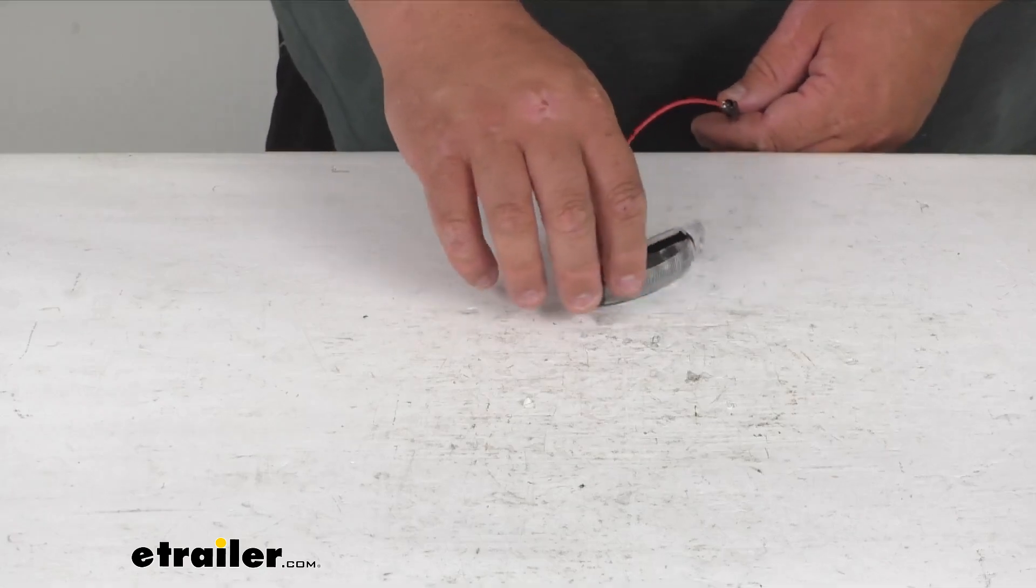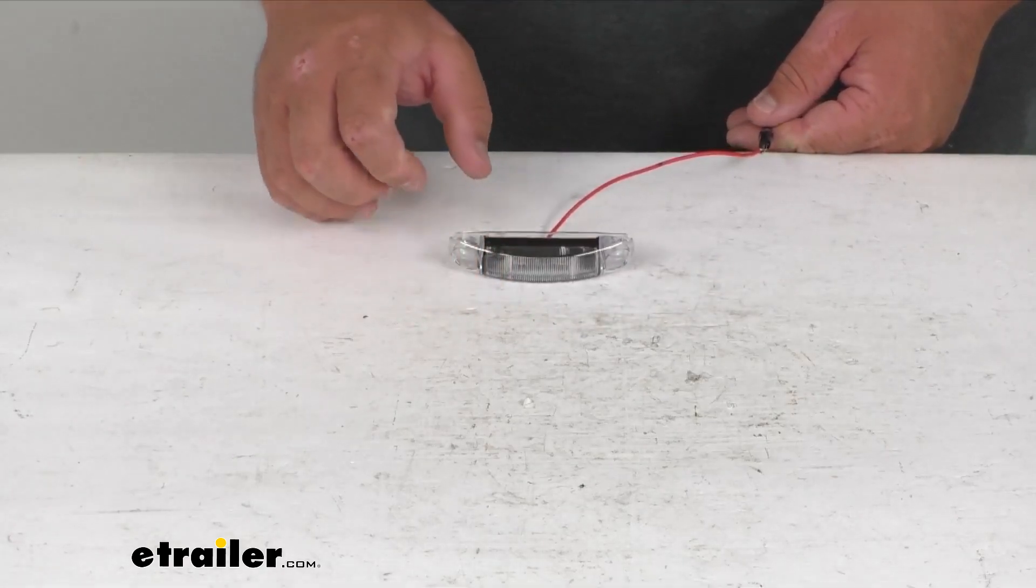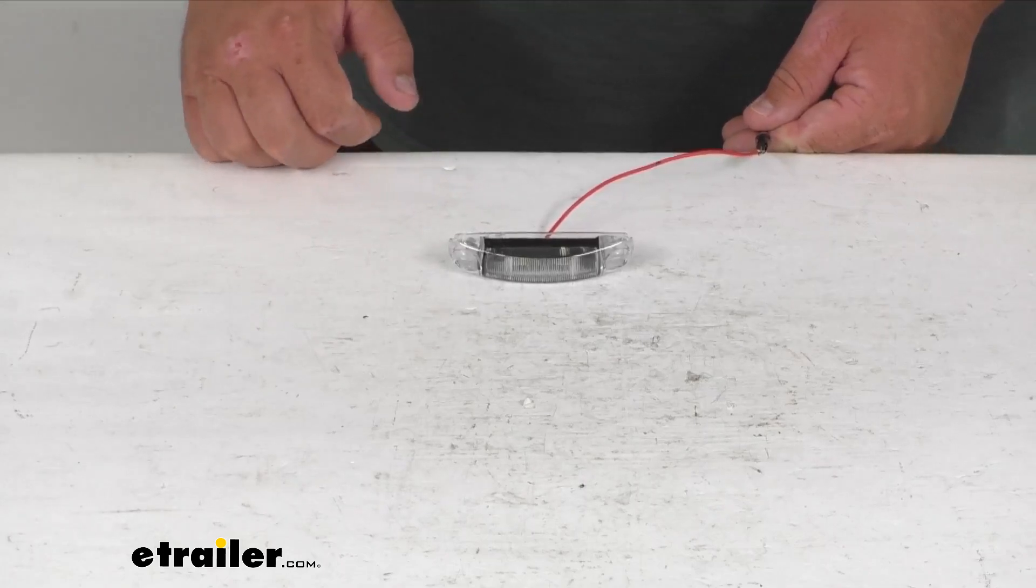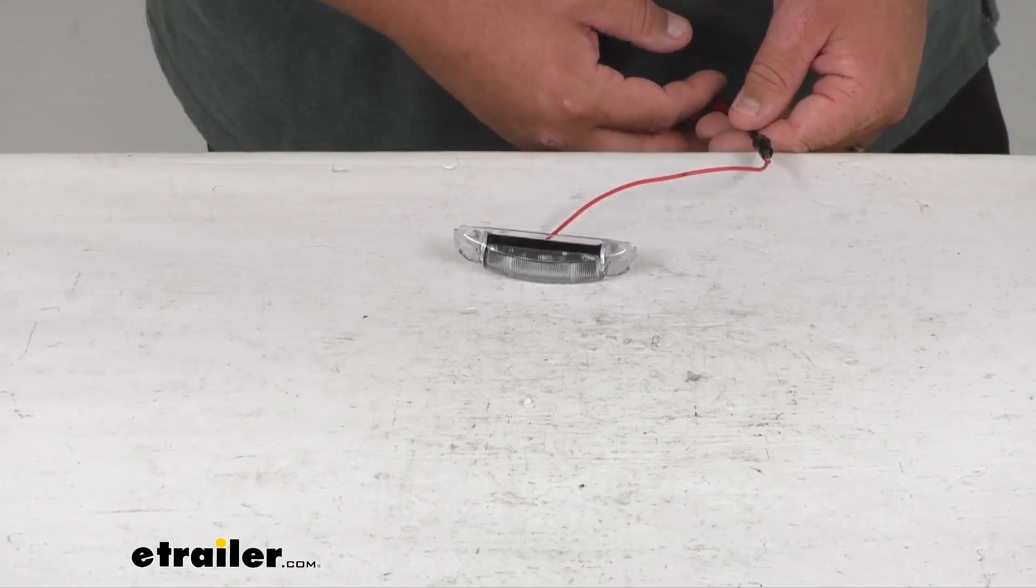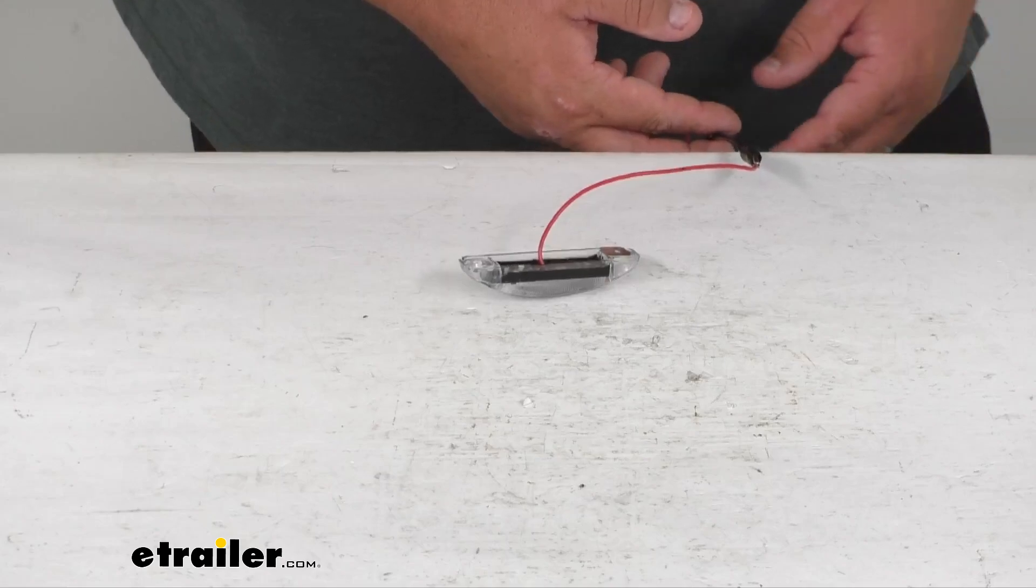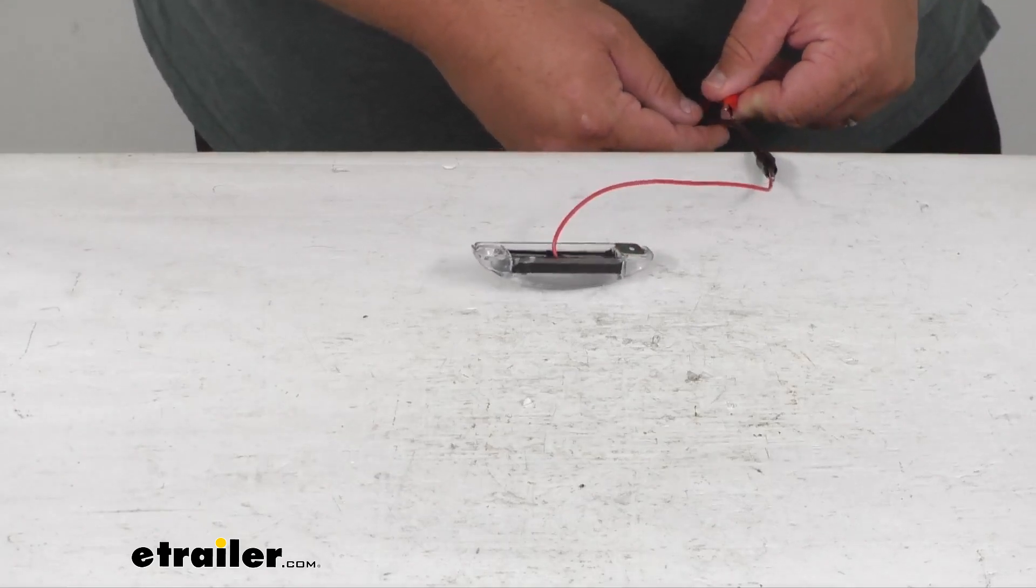I've got it plugged in here with an alligator clip for demo purposes. It's DOT compliant and P2 rated if mounted vertically, or PC rated if mounted horizontally. I'm going to light this up and turn the overhead lights on and off.